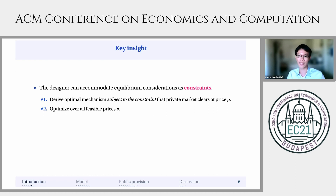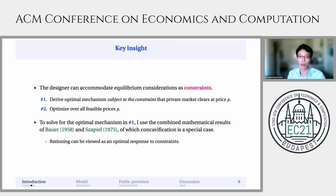The key insight that the main result relies upon is that the designer can accommodate equilibrium considerations as constraints in the design problem. Thus, the design problem decomposes into two stages. In the first stage, the designer designs the optimal mechanism subject to the constraint that the private market clears at some price P. In the second stage, the designer then optimizes over all such feasible prices P. The second stage is a simple one-dimensional problem over prices. To solve for the optimal mechanism in the first stage, I use the results of Bauer and Shapil. These results allow rationing to be viewed as an optimal response to constraints, and because equilibrium considerations are mathematically equivalent to constraints in the design problem, rationing of the public option is generally required whenever these constraints bind.